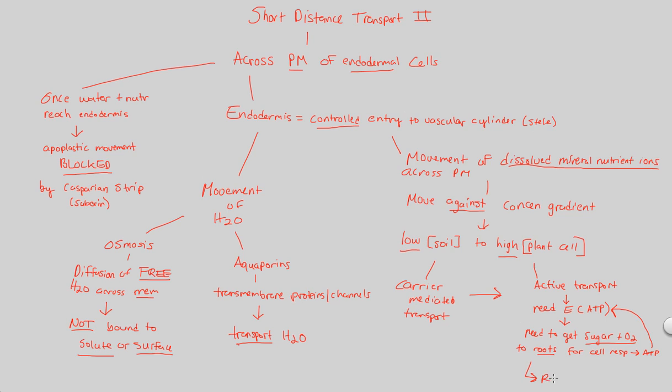In order to move these dissolved mineral nutrient ions from this area of the endodermal cells across its plasma membrane into the vascular cylinder we need energy. We can only make energy through cellular respiration. So now do we have a big problem yet again? How do we do cell respiration in an area of the plant that doesn't really do its own photosynthesis, namely the root because this area of the plant does not make its own sugar and oxygen. We need some sort of transport.